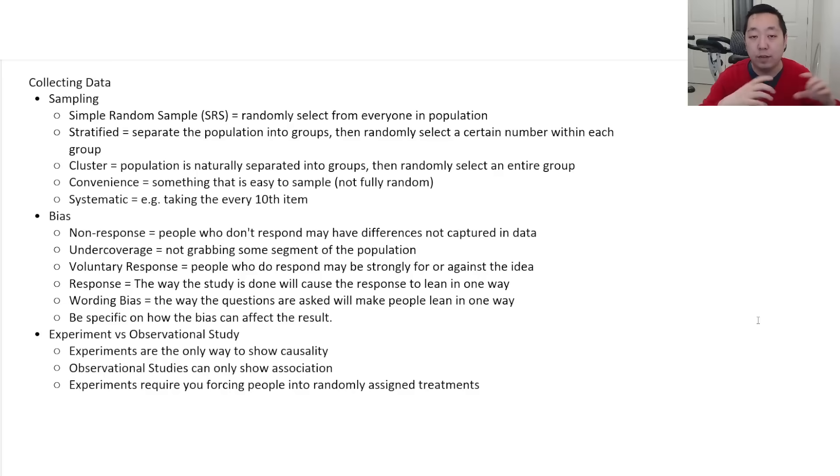So what you're doing is you're stratifying by a variable you think is important to separate because you want to make sure, for example, you might want to get men and women and make sure you get an even number of men and women. So you may separate them first and randomly select from those two groups. As opposed to cluster, where things are naturally grouped, you're going to randomly pick one of the groups and sample everyone within that group. You don't get everyone from every group.